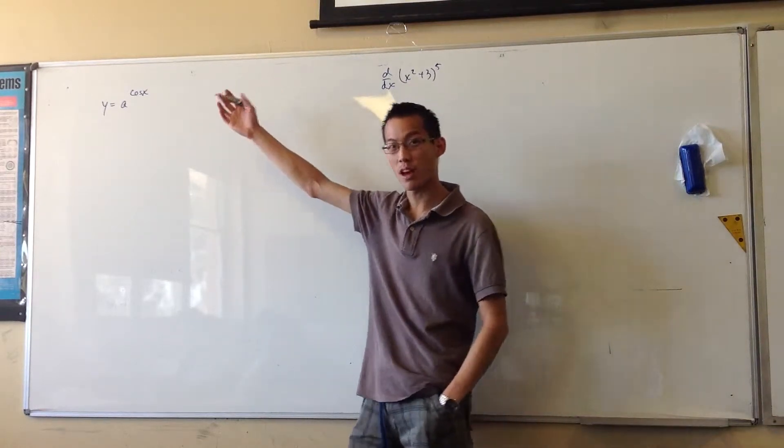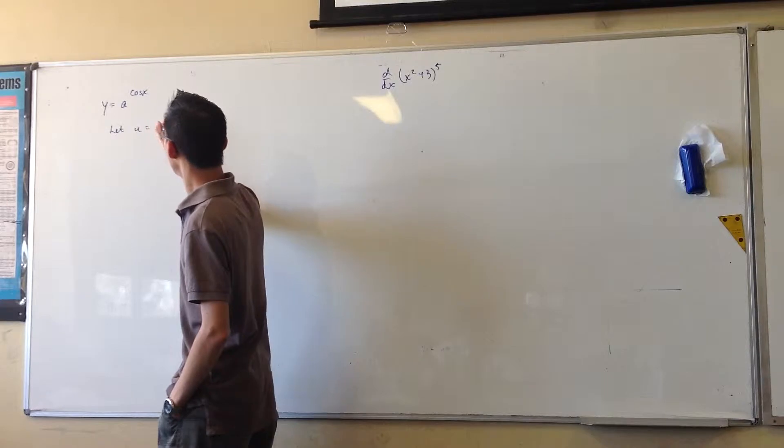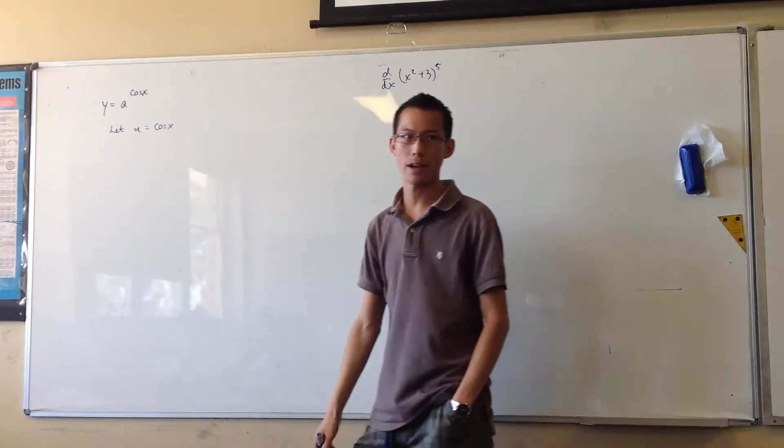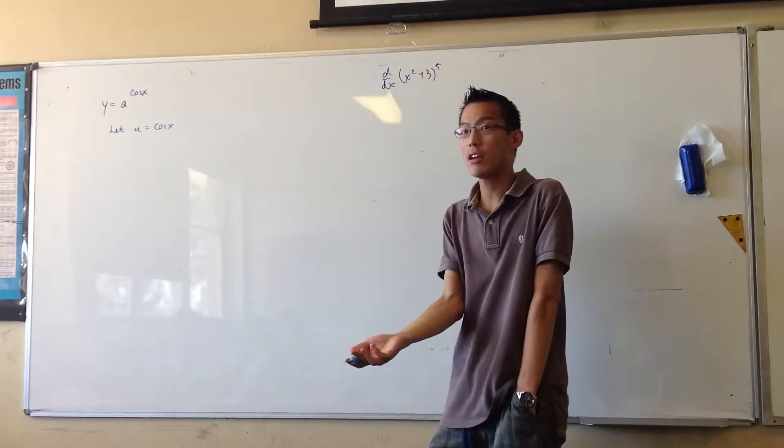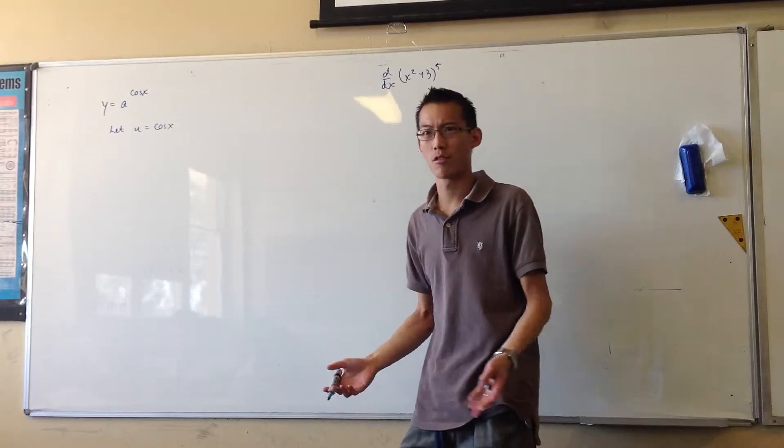It's just cosine, right? So I'm going to say let u equal cos x, okay? So now, just think chain rule. What does chain rule require you to do?